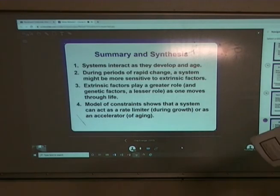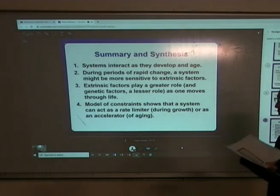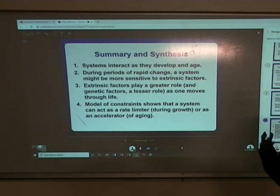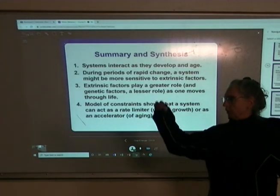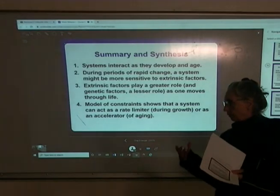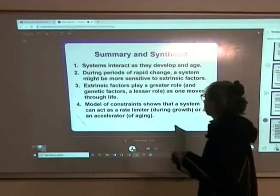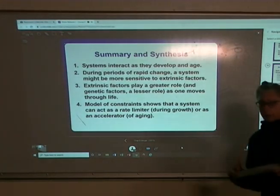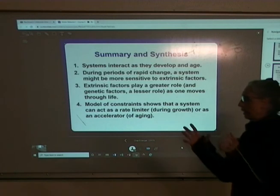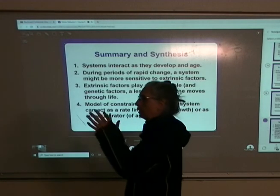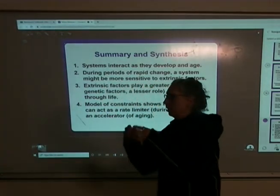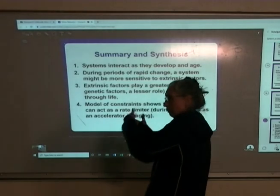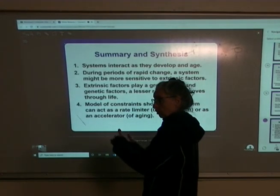Keep thinking about the interaction of systems through our constraints model: which systems interact? We already mentioned that the muscular system is stimulated and grows in response to the stretch put on it by growth in the skeletal system. Always keep asking: how does my constraints theory work with this? If I see this change occur in this person, what might I see occur in their motor skill?